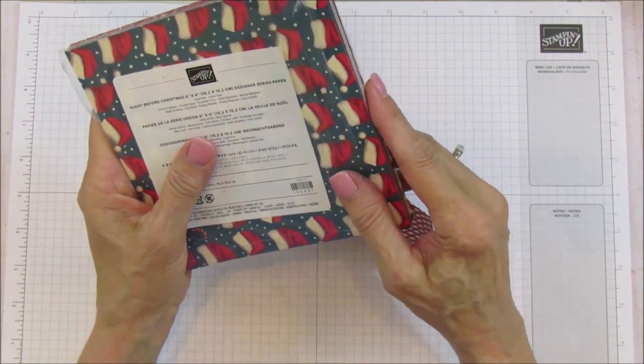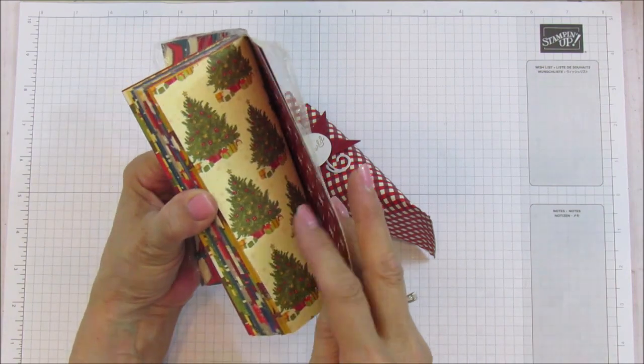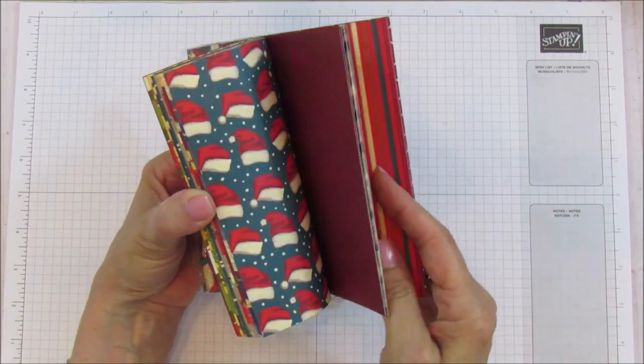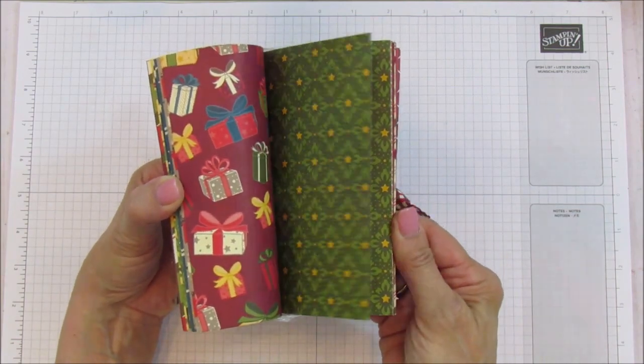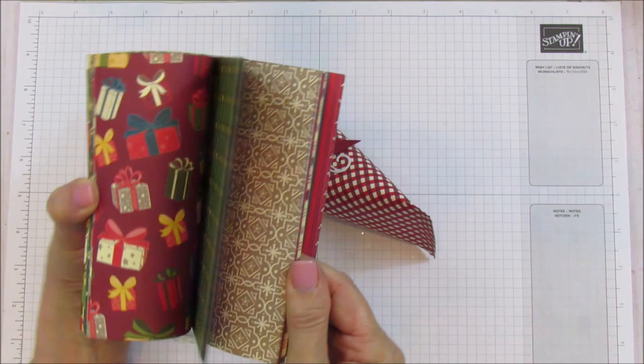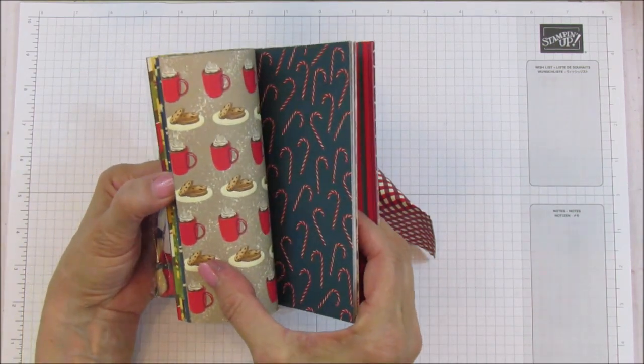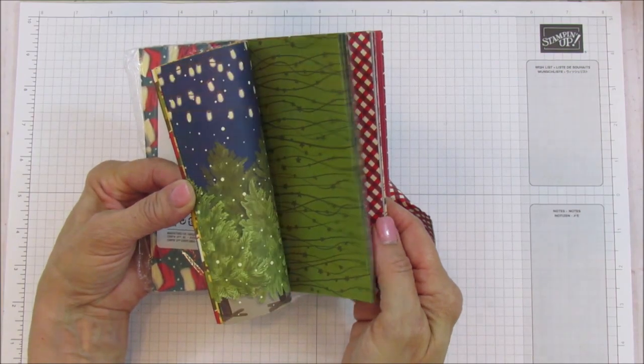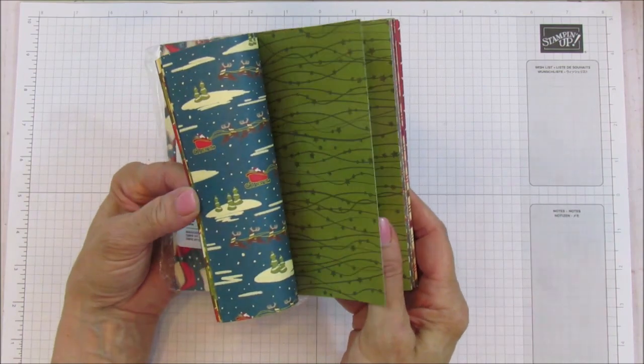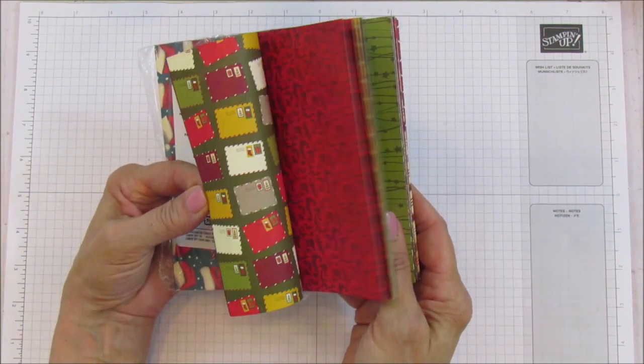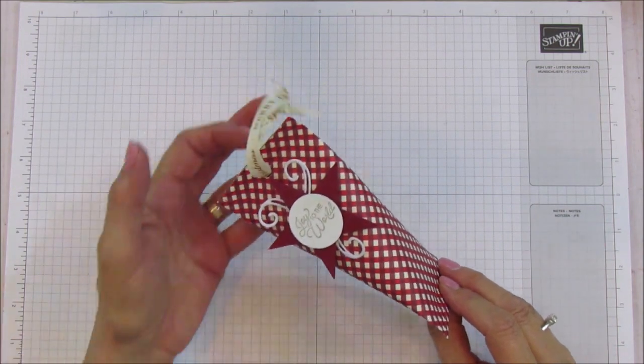We're making it super simple - we're just using the whole 6x6 to make these. Look at the patterns on this. You could use any of these, you can make one of every one. I love the green one. Look at these candy canes and the little coffee cups - so retro to me. I love the Santa and the sleigh. There's so many great patterns in this, so we are using this to make our sour cream container.